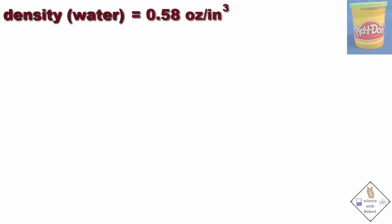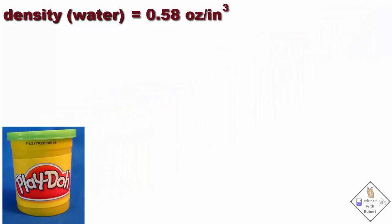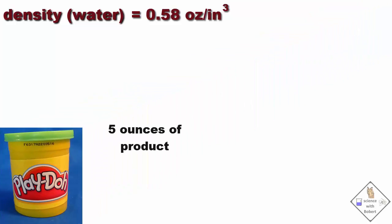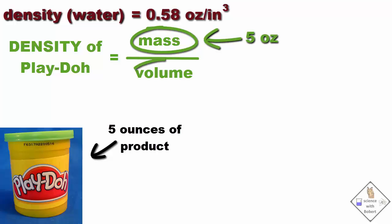The density of water is 0.58 ounces per cubic inch. Play-Doh makes its product to be exactly 5 ounces in its smaller cans. So if we want to calculate the density of this Play-Doh, we already know half of what we need. We just have to determine the volume of the 5 ounces of Play-Doh.